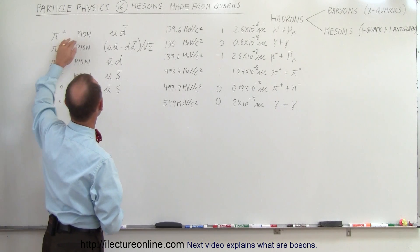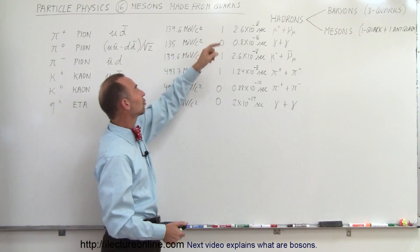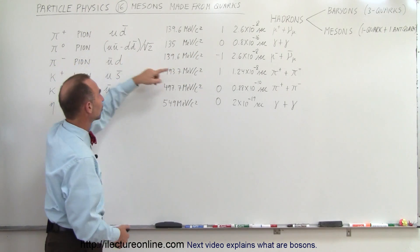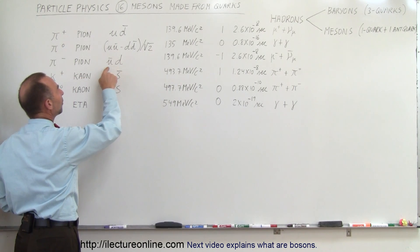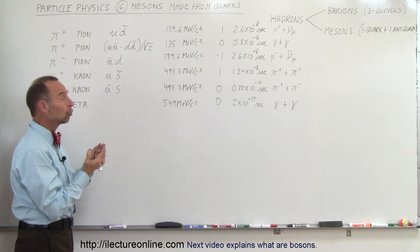They do carry a charge, some of them, like the positive pion carries a positive charge, and the negative pion carries a negative charge, and this, of course, depends upon what they're made out of. Remember that an up quark has a positive two-thirds charge.